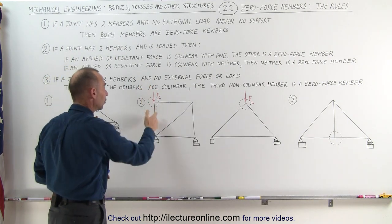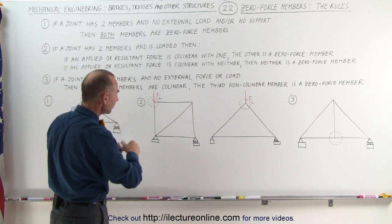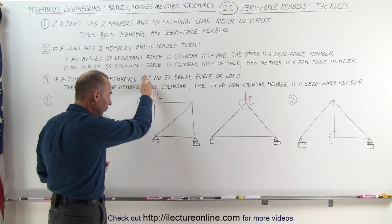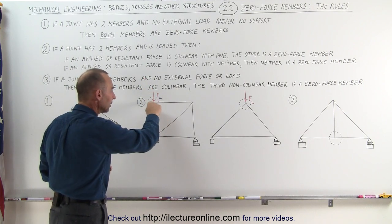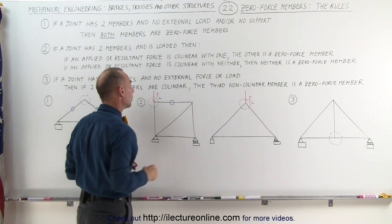Notice that the load force, and I should have said load here, let me put an L here, so the load force pushing down on this joint is collinear with this member, but not with the other member. That means the other member must be a zero force member.